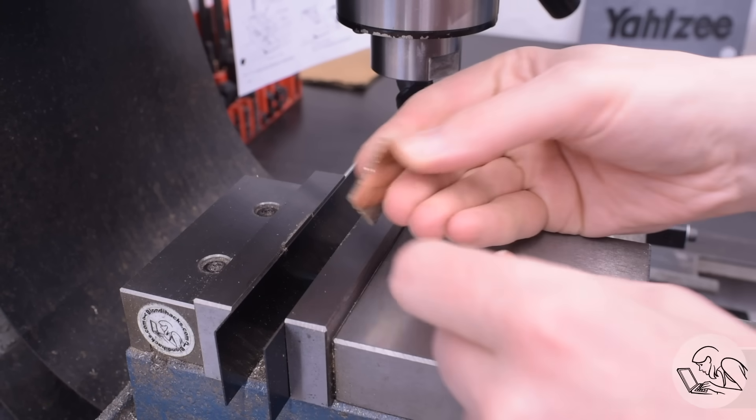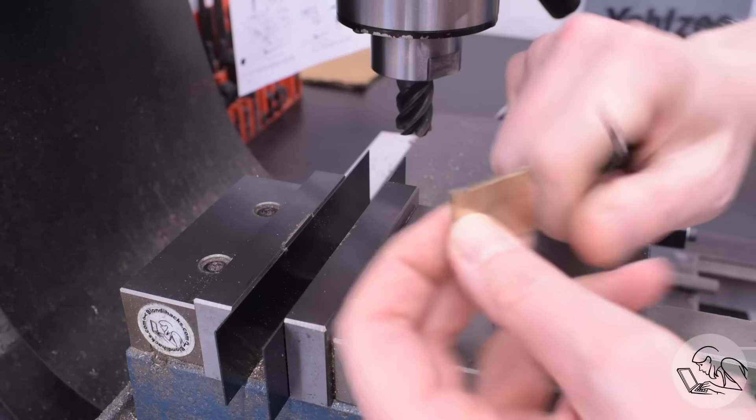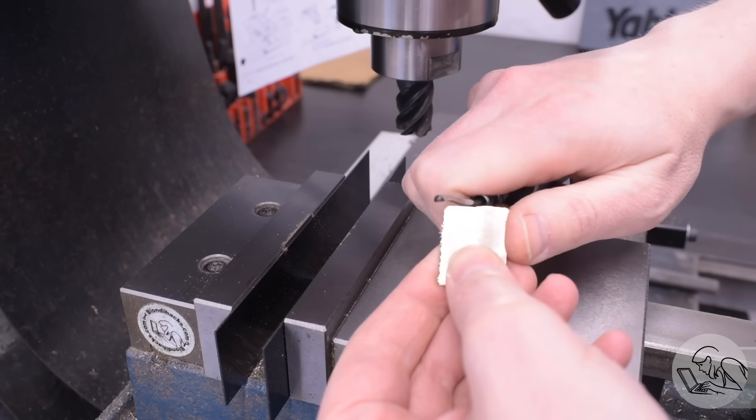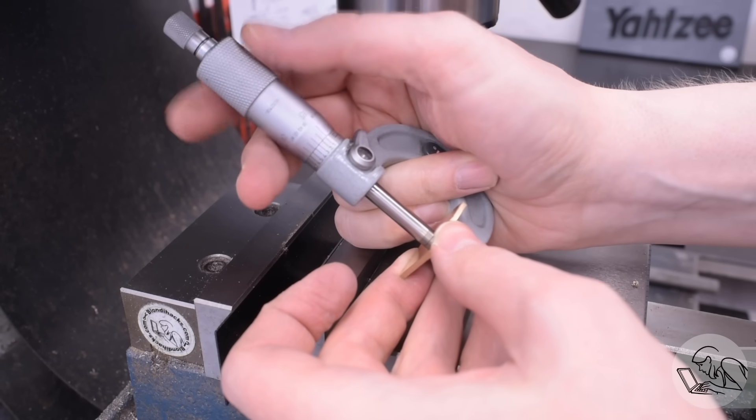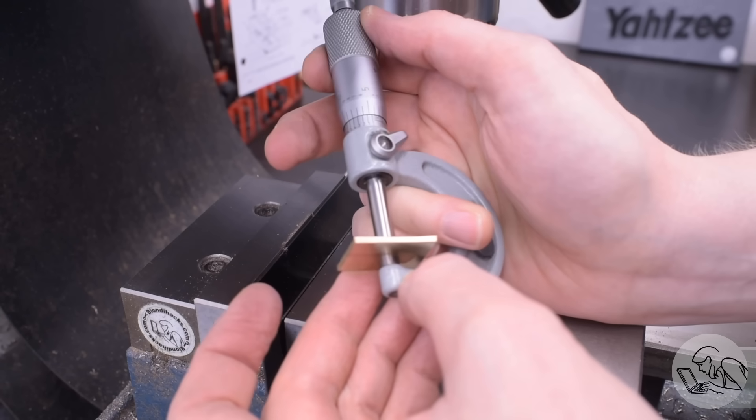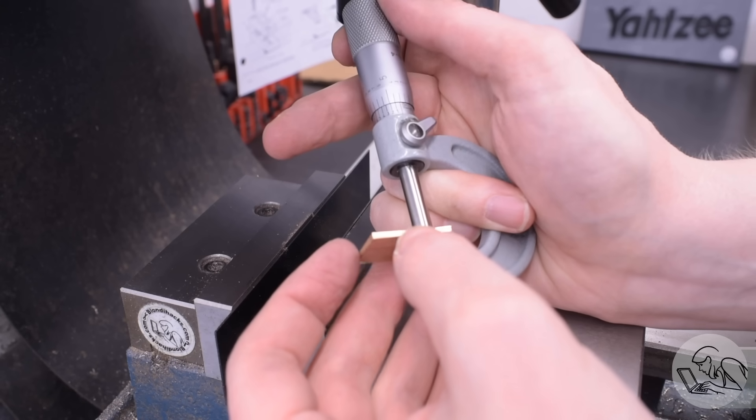I'll get that deburred and verify my dimensions. The overall thickness of this piece is fairly important, but not super critical. We can always do a little bit of sanding later if we need to. It just needs to run smoothly inside the expansion link assembly. And that is looking good. We're definitely close enough to proceed.